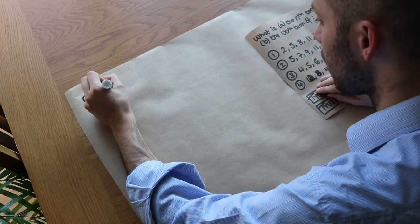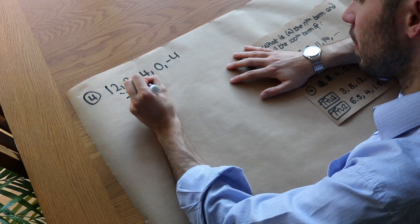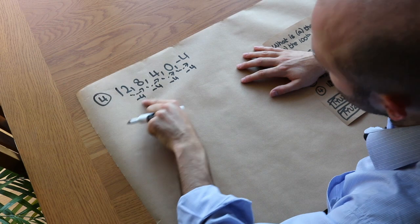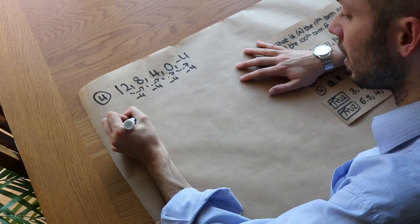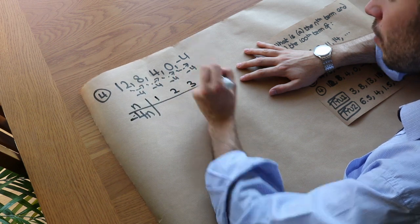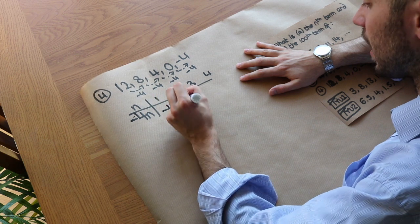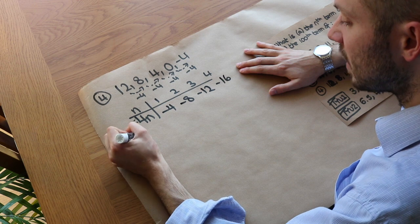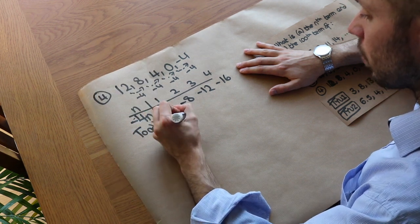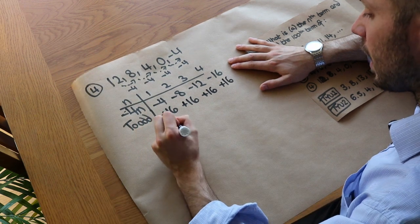Fourth sequence: 12, 8, 4, 0, minus 4. What's happening each time? We're subtracting 4, subtracting 4, subtracting 4. So we can see we're subtracting this time rather than adding. Just because it's a negative number it doesn't change the maths — we still put that number in front of n, so it's going to be minus 4n. Using the table method with n as 1, 2, 3, 4: minus 4n gives us minus 4, minus 8, minus 12, minus 16. What do I need to add to get to the correct terms? I've got minus 4 and I want 12, so I need to add 16. It will always be add 16. So the formula is minus 4n plus 16.